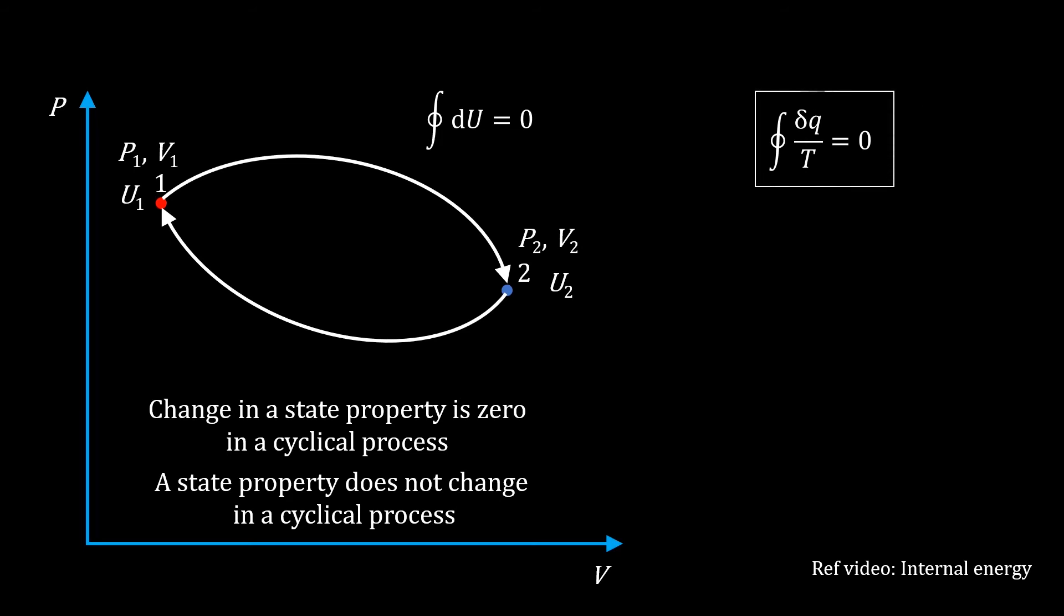Compare this with what we have learnt from Carnot's engine. The cyclic integral of delta Q divided by T is zero. Therefore, this integral which is Q divided by T is the change in a state property.